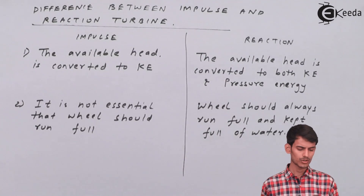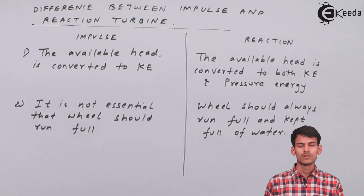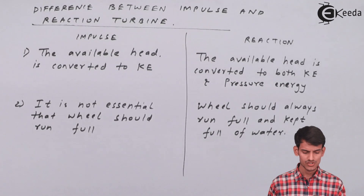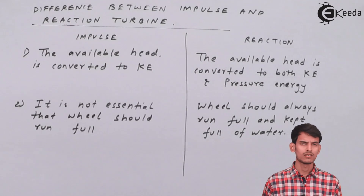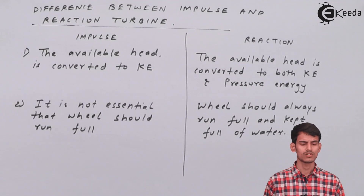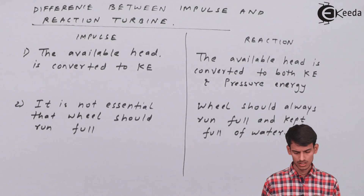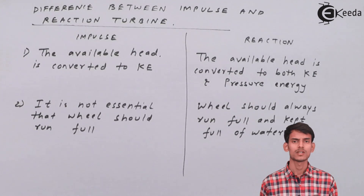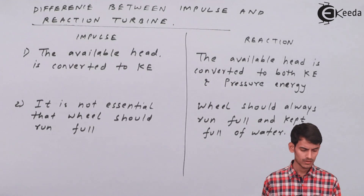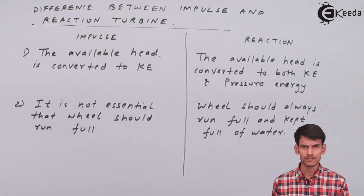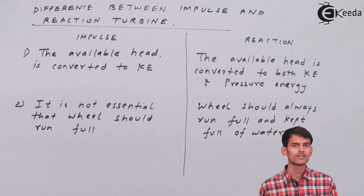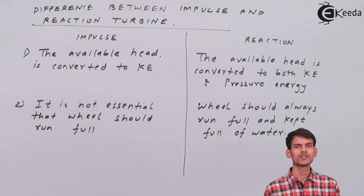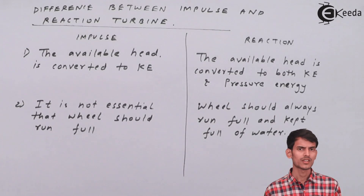The second point: in an impulse turbine it is not essential that the wheel should run full. Since in impulse turbine there is no pressure energy involved, whereas in reaction turbine there is pressure energy involved. In a Pelton turbine, the pressure inside the turbine is always atmospheric pressure because all the energy gets converted to kinetic energy.